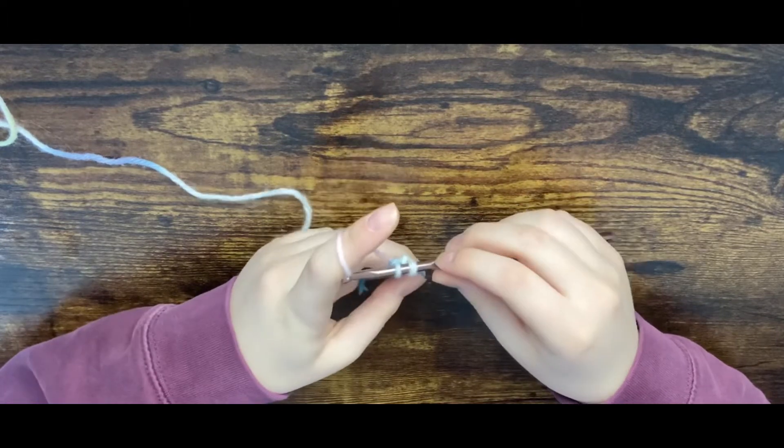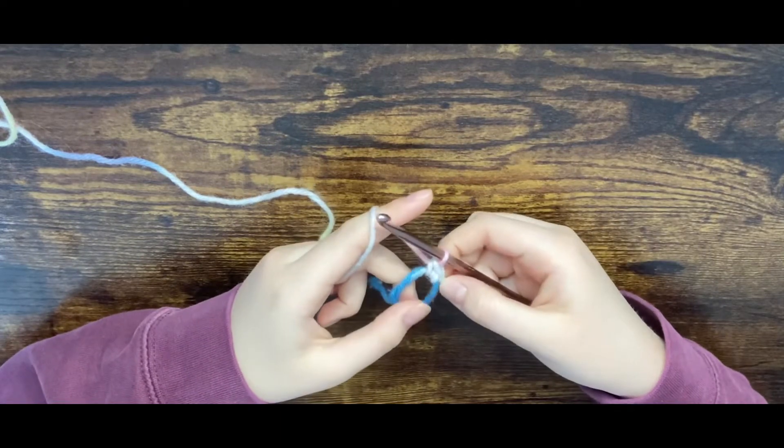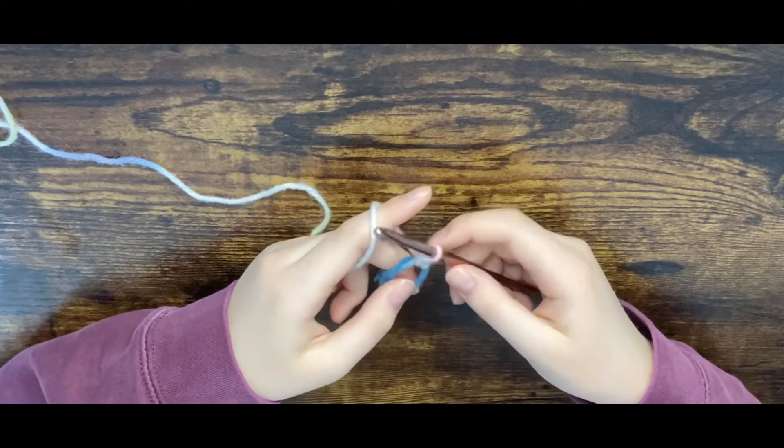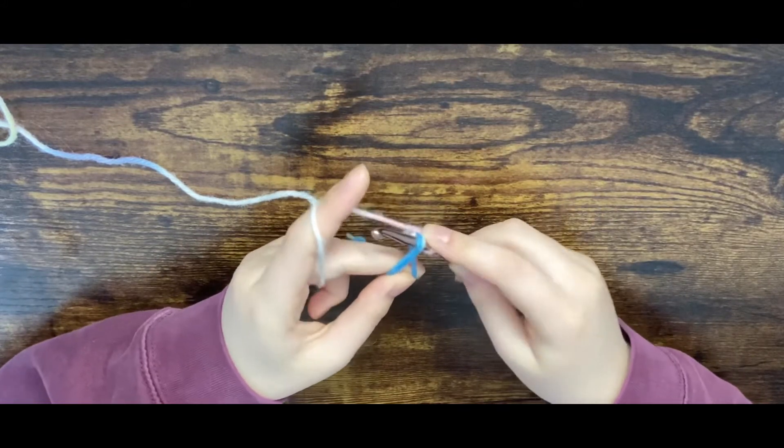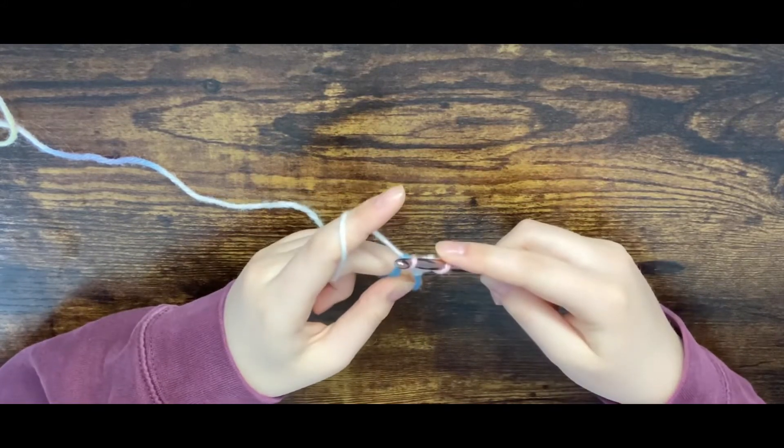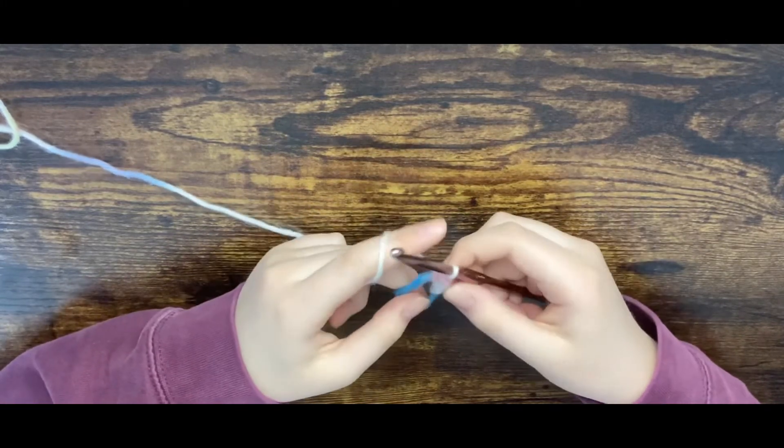You have two loops and then you're going to yarn over and pull through like usual. It's still giving you a single crochet, it's just being worked in a loop. Then you just keep doing that. Insert your hook into the loop, yarn over, pull through, yarn over, and pull through both loops. Just like that.